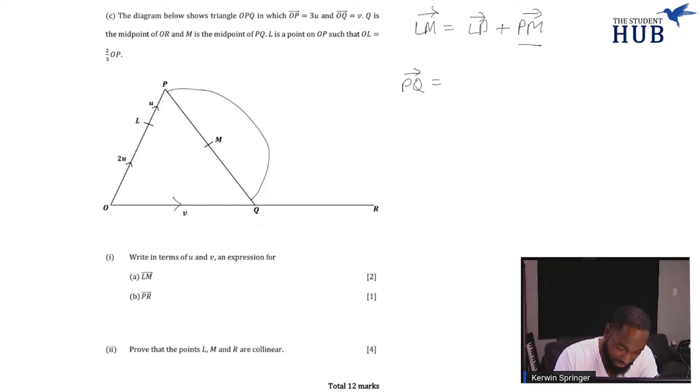PQ is equal to PO plus OQ. Understand what I'm doing? I'm going to get this whole thing PQ and then I'll half it to get PM. The reason I want to get PM is because I need it to get LM.